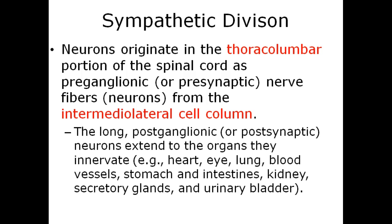The sympathetic division neurons originate in the thoracolumbar portion of the spinal cord as preganglionic or presynaptic nerve fibers from the intermediolateral cell column. The long postganglionic neurons extend to the organs they enervate.